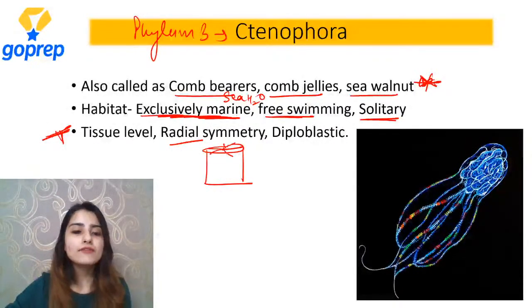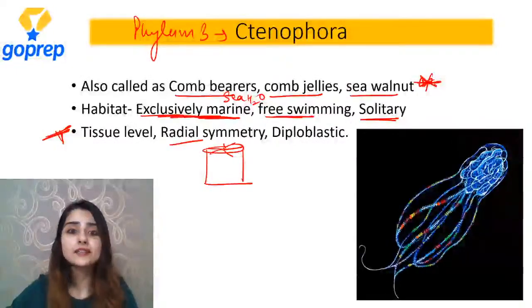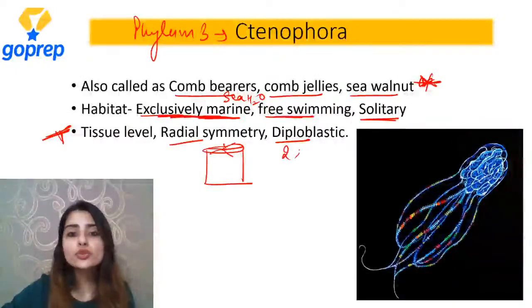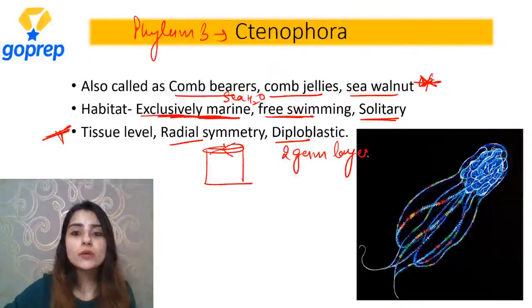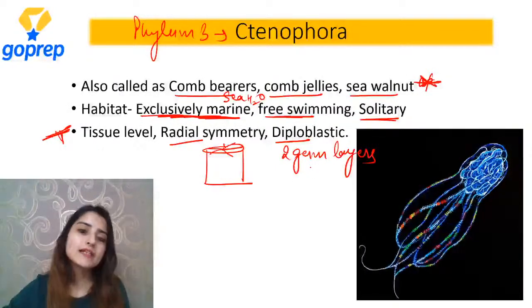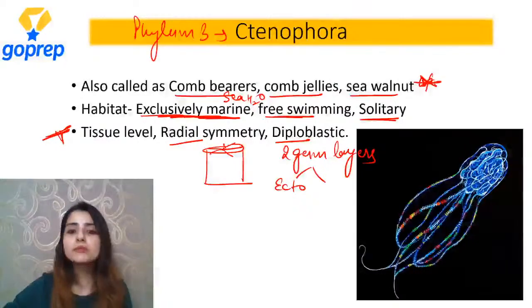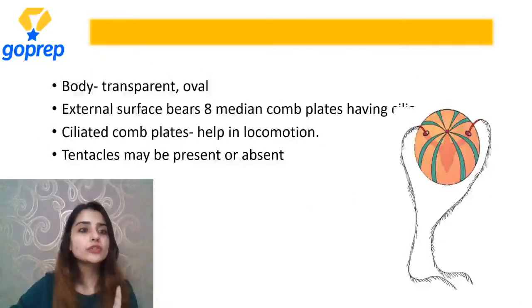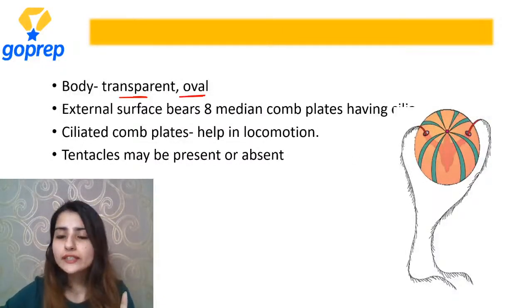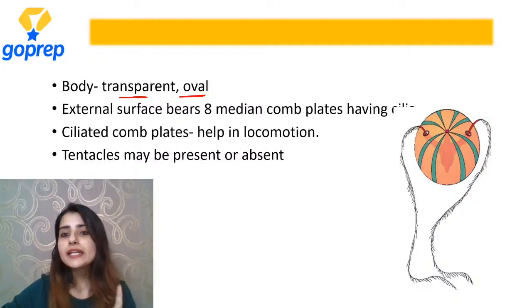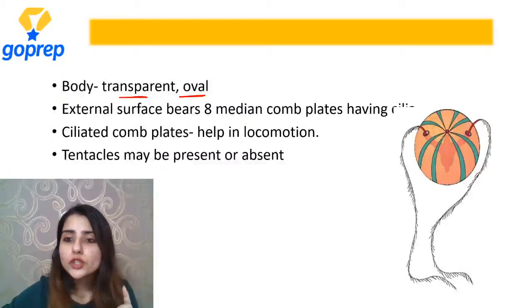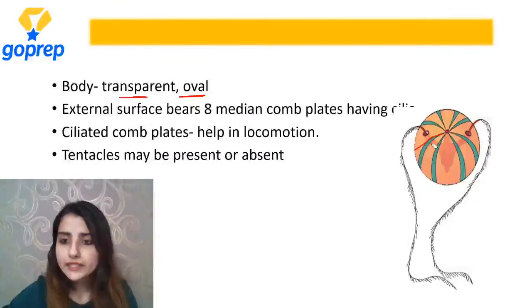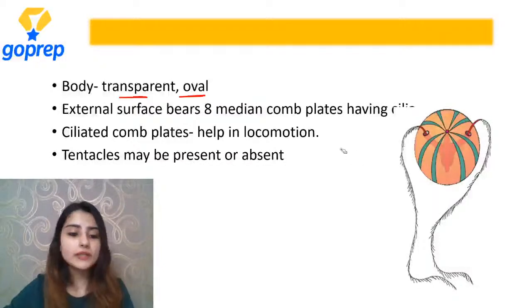Ab tak toh aap samajh chuke hain - kaun sa level rehta hai inka? Tissue level of organization, just like Coelenterata - cells forming tissue but tissue not forming organ system. Radial symmetry hai - body can be divided into equal halves by any plane passing through their center. Aur kya hain inke paas? Two germ layers - toh hum kya bolte hain? Diploblastic. Diploblastic mein bahar wali kya hoti hai? Ectoderm. Andar wali? Endoderm.